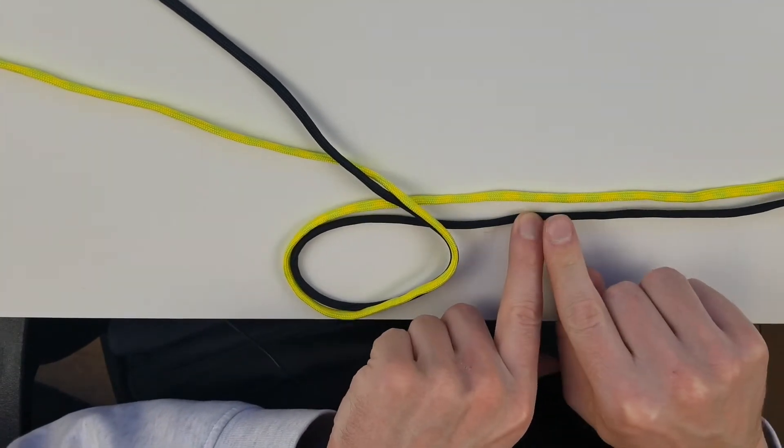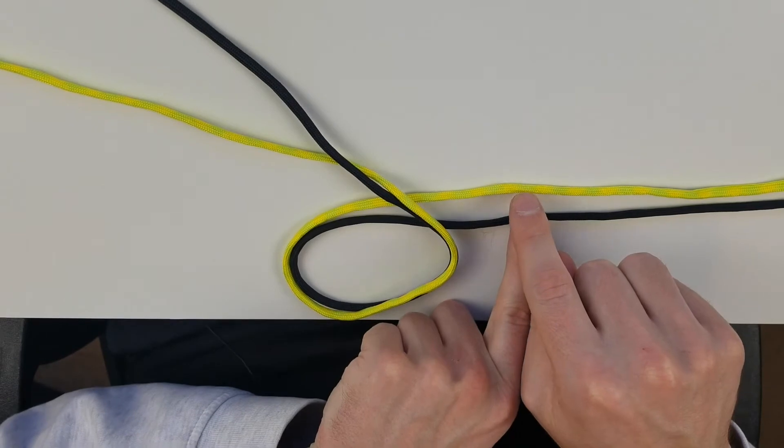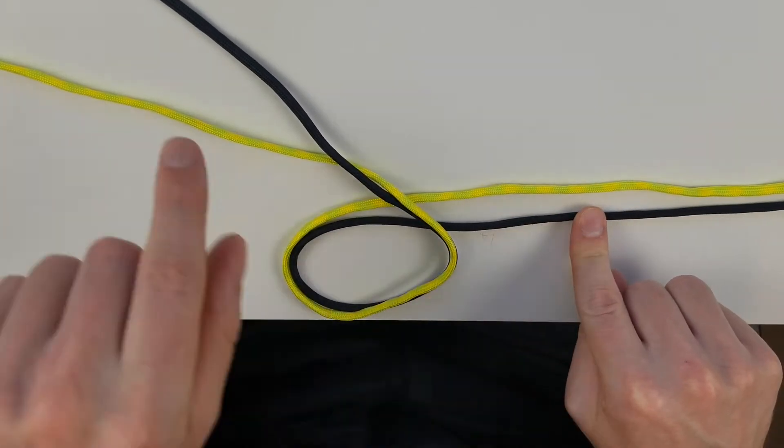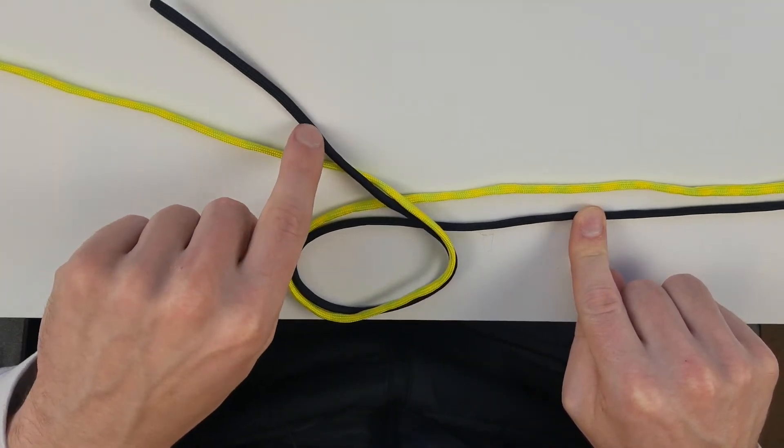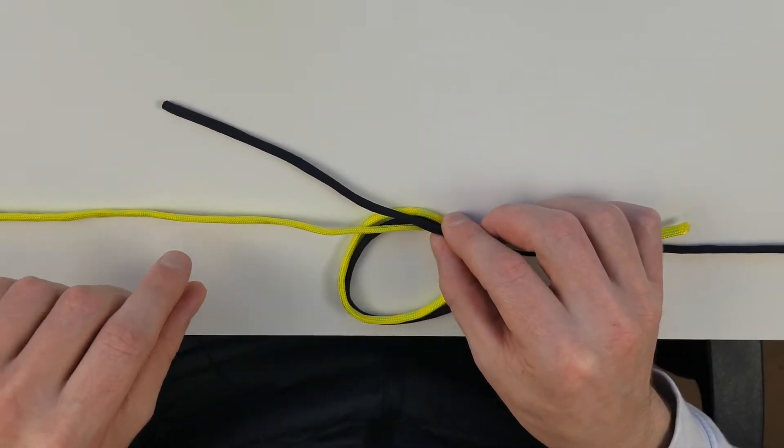The black line here is the main part of our braid, the yellow will be the tag end of our mono, the black here will be the tag end of the braid, and the yellow here is the main part of our mono.